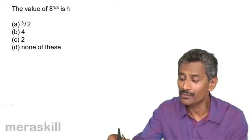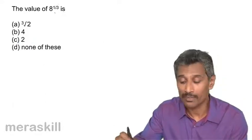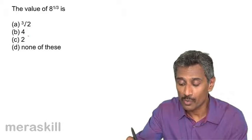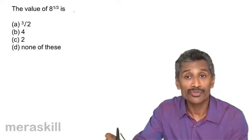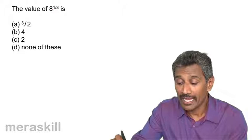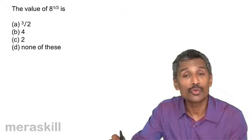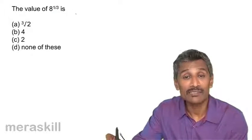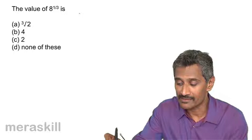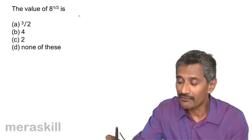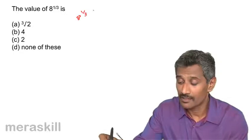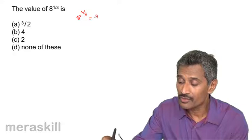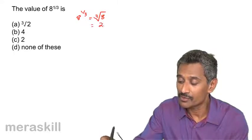The next problem: the value of 8 raised to 1 by 3 is what among the options? We use the rule that x raised to 1 by n is the same as the nth root of x. So 8 raised to 1 by 3 can be written as the cube root of 8, which is the same as 2.